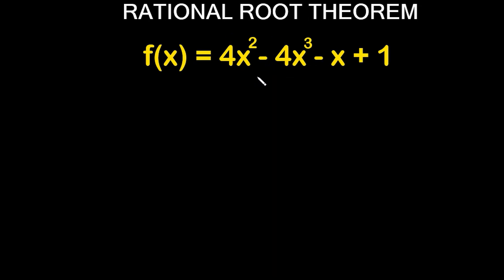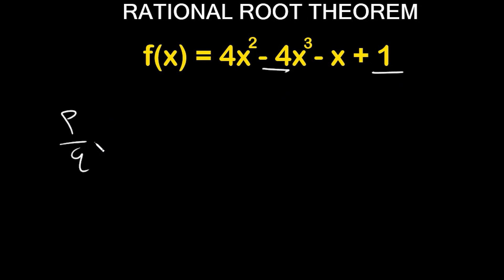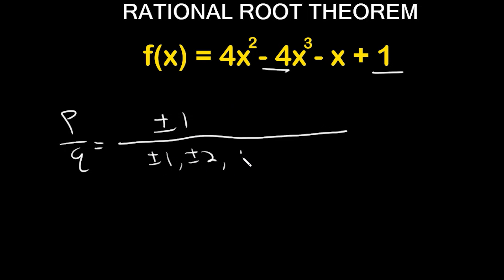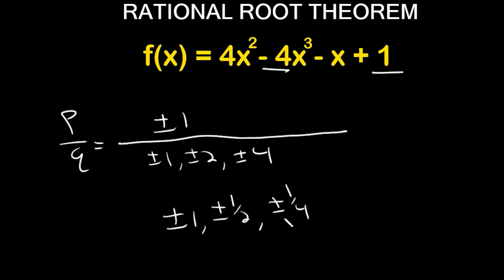Here's the next example. Again check that the polynomial is in order — it's not here. So the leading coefficient is not 4, it's actually negative 4. Since we write everything as plus or minus it wouldn't matter here, but always check the order. My leading coefficient is negative 4 and my constant is 1. Doing p over q: factors of the constant give plus or minus 1; factors of the leading coefficient give plus or minus 1, plus or minus 2, and plus or minus 4. Dividing out I get plus or minus 1, plus or minus one-half, and plus or minus one-quarter. Those are the possible rational roots.